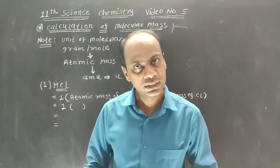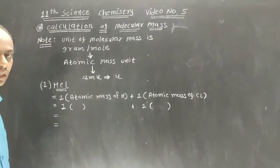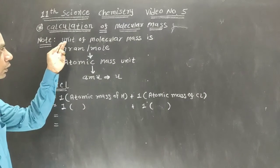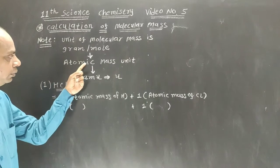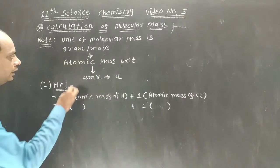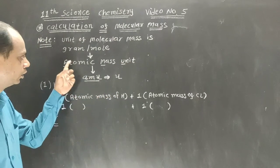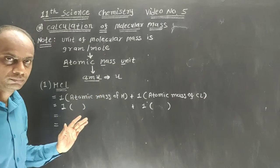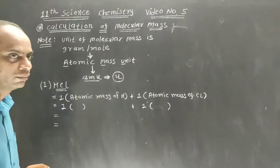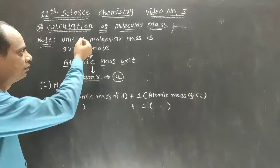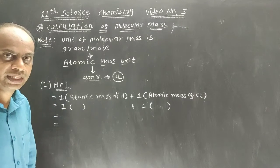Today we are going to deal with the application of videos 1, 2, and 3. So if you would like to revise those videos, please do so. Now let us start today's topic: calculation of molecular mass. The unit of molecular mass is gram per mole, also known as atomic mass unit, or AMU. Nowadays only the alphabet 'u' is written after the molecular mass or atomic mass.